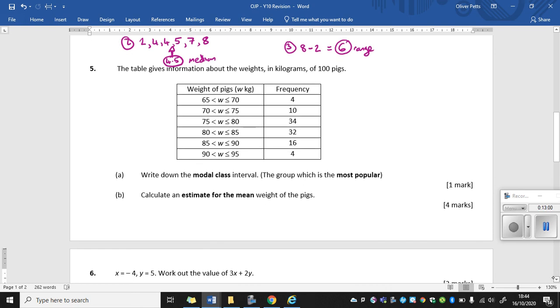So we have a table of data here and we've got groups. So these groups tell us the weights in kilograms of 100 pigs. So for example, in the first row, what this means is that there are 4 pigs. They have a weight of between 65 and 70. The next row, there are 10 pigs with a weight of between 70 and 75. And so on and so forth. Now question A says, write down what's called the modal class interval. Now, fancy term. Let's just focus on that word modal. That looks very similar to the word mode.